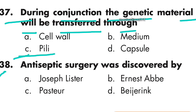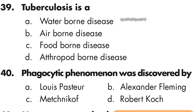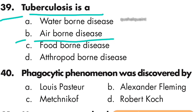Question number 38: Antiseptic surgery was discovered by Joseph Lister. Option A is right — Joseph Lister. Question number 39: Tuberculosis is an airborne disease. Option B is right — airborne disease.